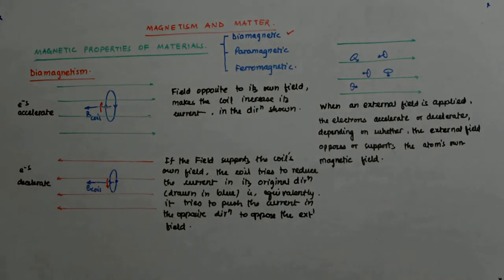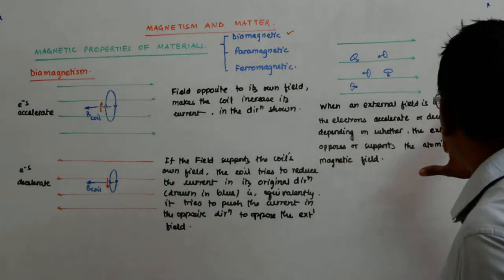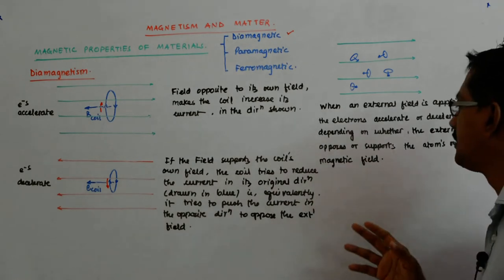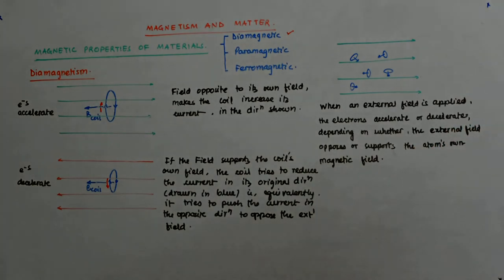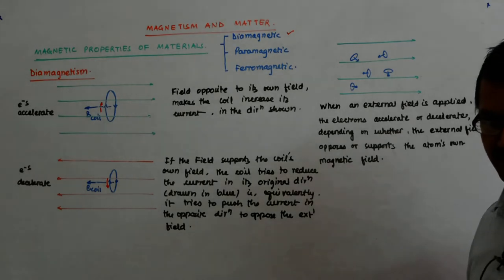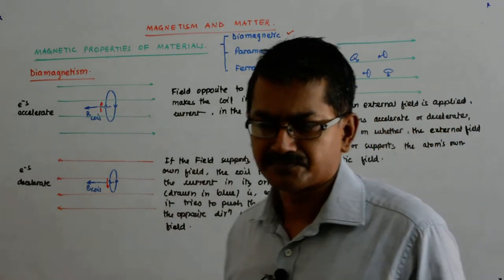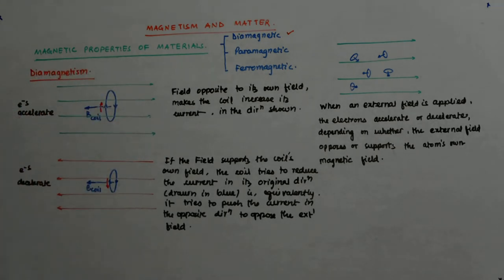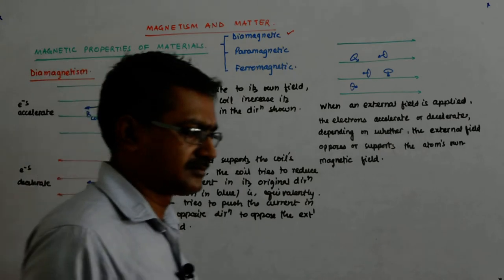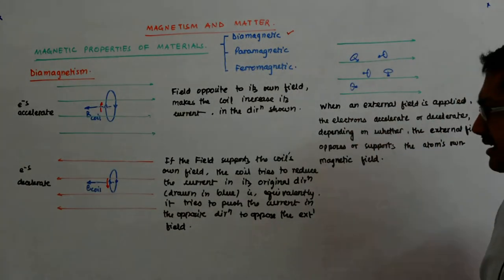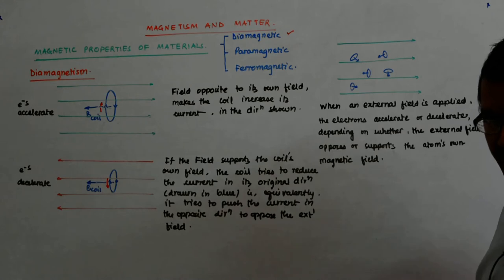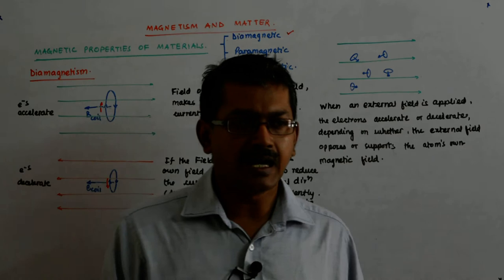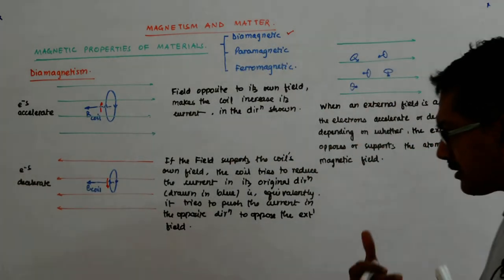So when an external field is applied, the electrons accelerate or decelerate depending on whether the external field opposes or supports the atom's own magnetic field. And that we can clearly see from here — it is exactly the same thing that happens. Now the moment that happens, it means what happens in the net: I am opposing the external field.